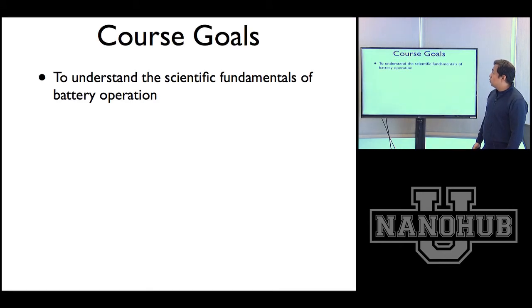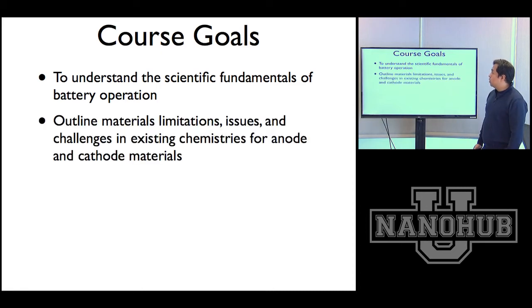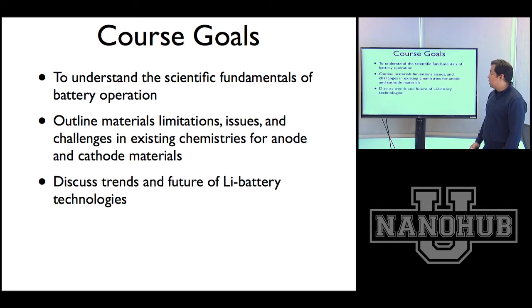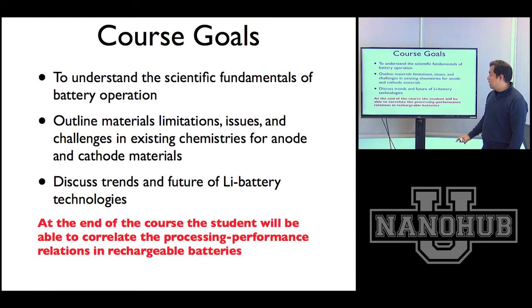What are the course goals? We want to understand the scientific fundamentals of battery operation, the material science behind that. We want to understand the limitations of every part, the issues, and the current technological and processing challenges associated with existing chemistries for both anode and cathode materials. And once we have that in place, we will be in position to discuss the trends and the future of lithium-ion battery technology. At the end of the semester, at the end of the course, we will be able to correlate the processing, even material selection on performance and durability of rechargeable battery technology.